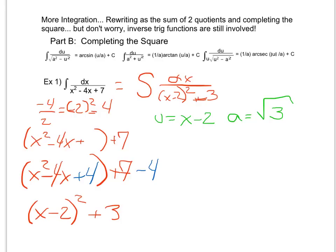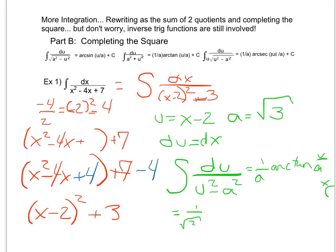And then du is just 1 times dx. So this becomes the integral of du over u squared plus a squared, which integrates to be 1 over a arc tangent of u over a, plus c. Well, I know that a was square root of 3, so I get 1 over the square root of 3 times arc tangent of u, which is x minus 2 over the square root of 3 plus c.